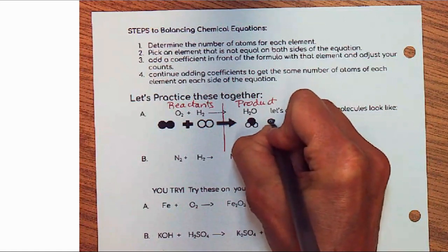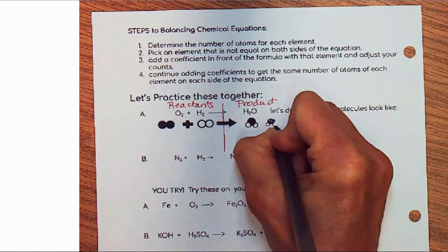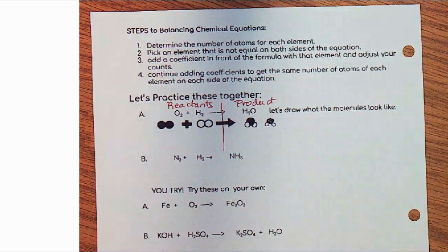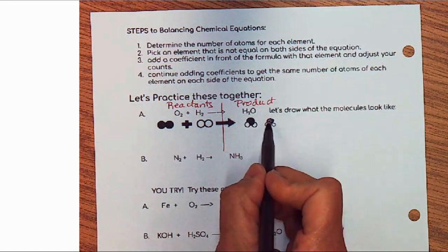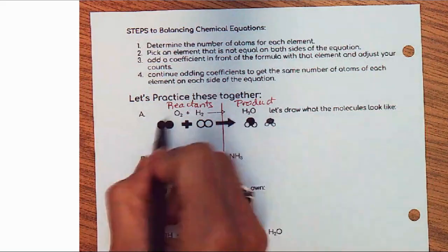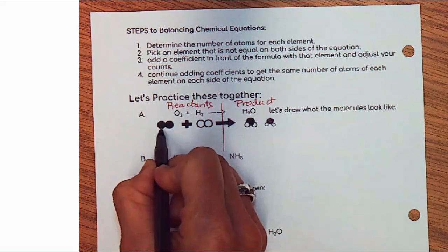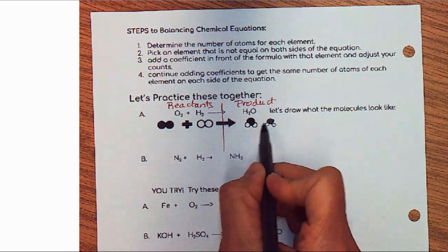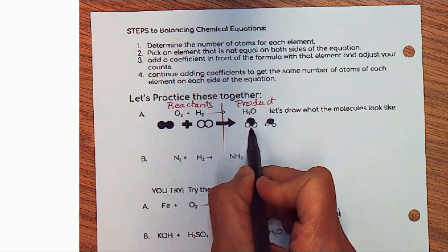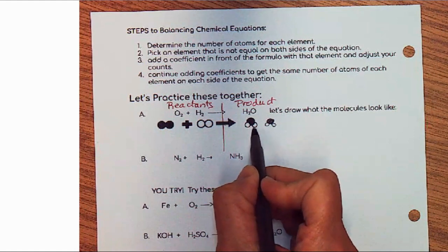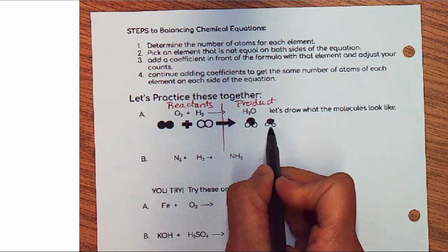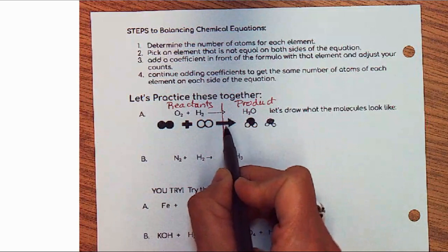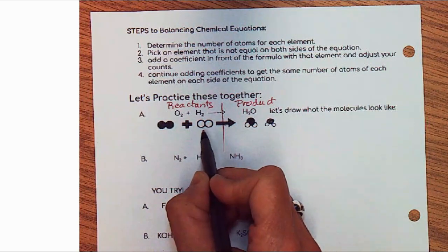We're going to draw another molecule of water. Right away you can see that our oxygens are balanced — we have two atoms of oxygen on the reactant side and two on the product side. But look what happens when we add an extra molecule: instead of two atoms of hydrogen, we now have four. So on the left side we have to balance it out by making another molecule of H₂.